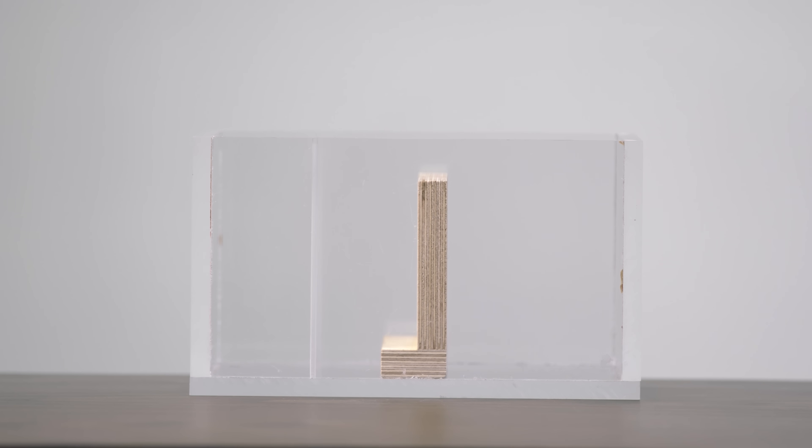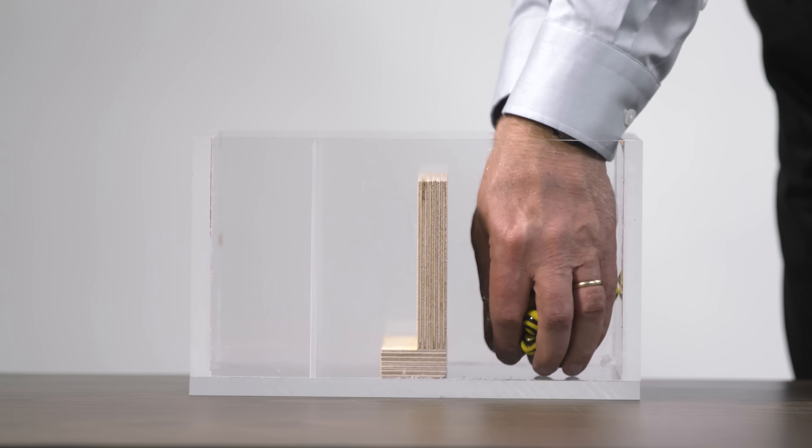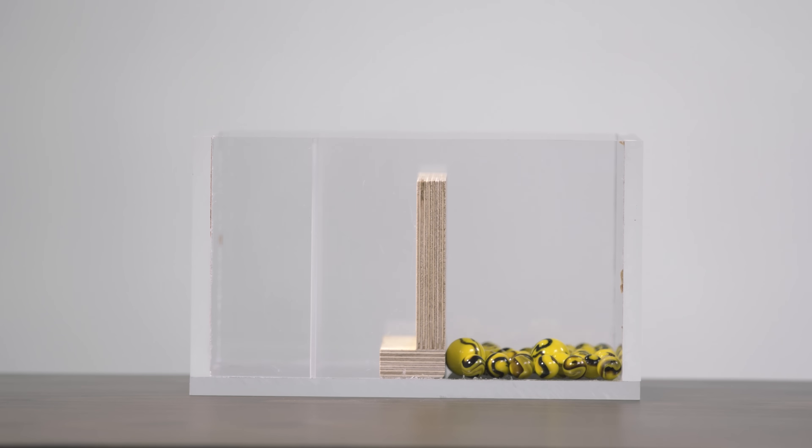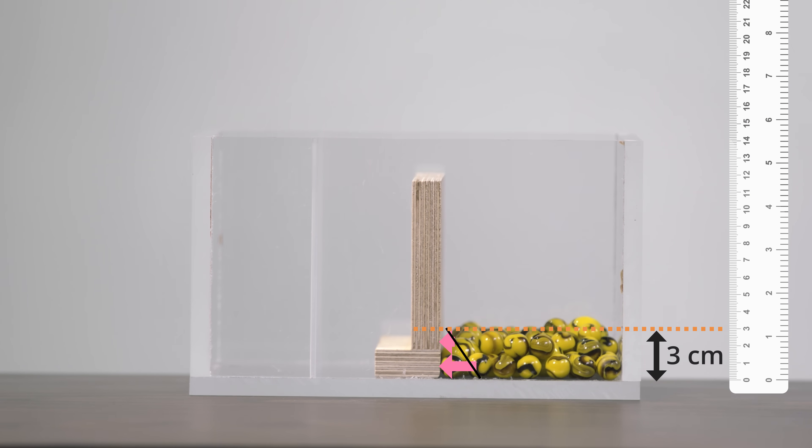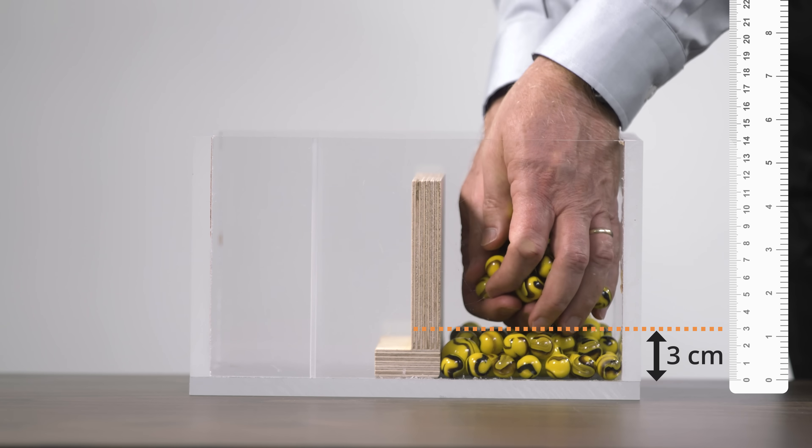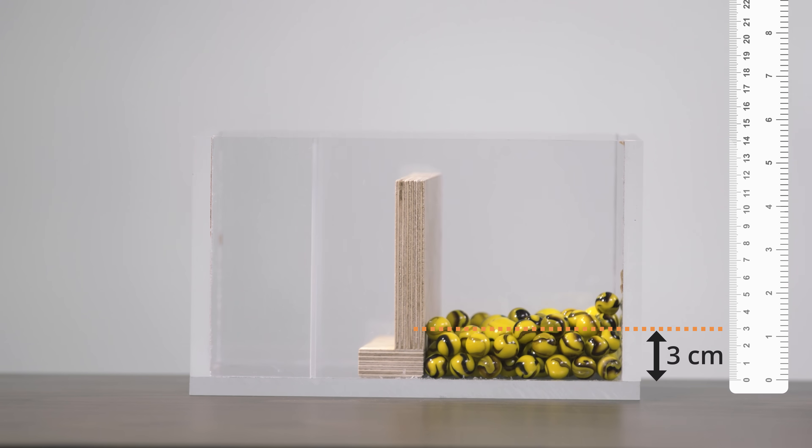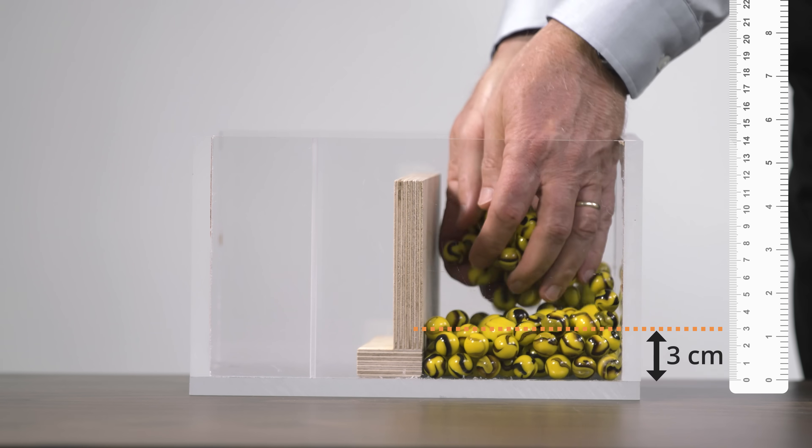Before we declare a final verdict, let's use the model to find out what happens when the bottom leg points to the left away from the marbles. As we add marbles, we discover that the horizontal forces they produce create yet another mode of failure, namely sliding of the wall. And this occurs when the marbles reach a depth of 3 cm.